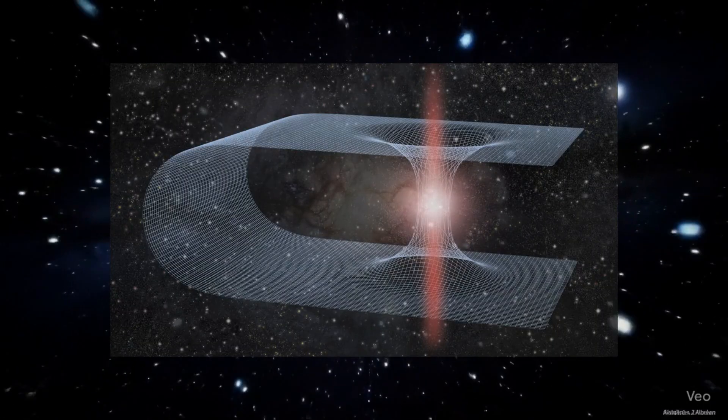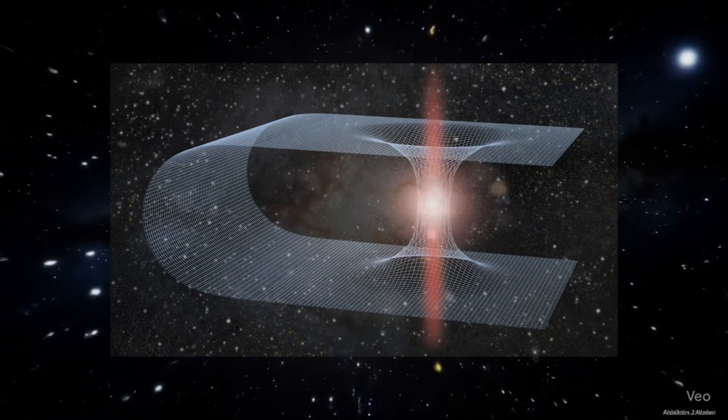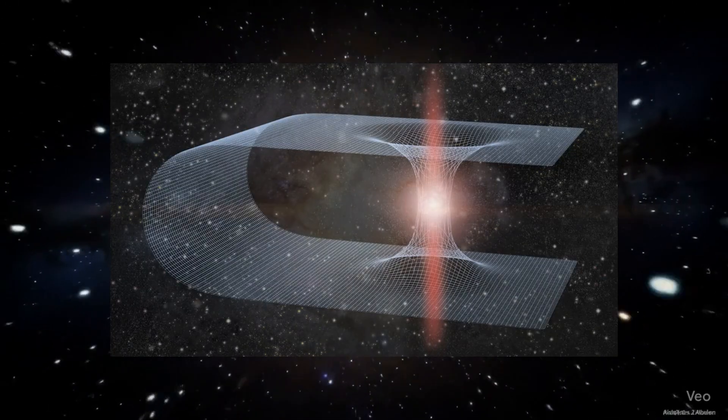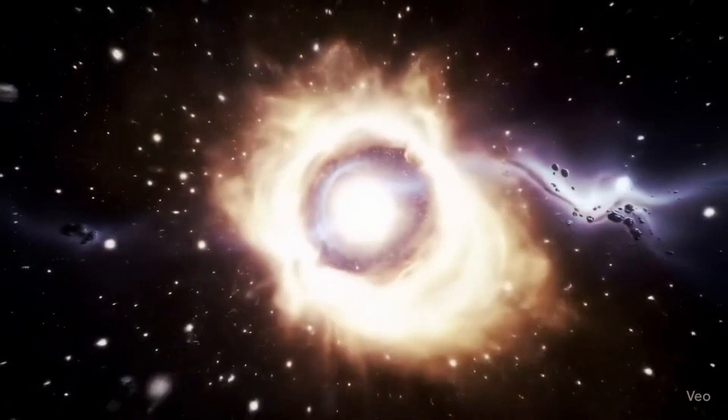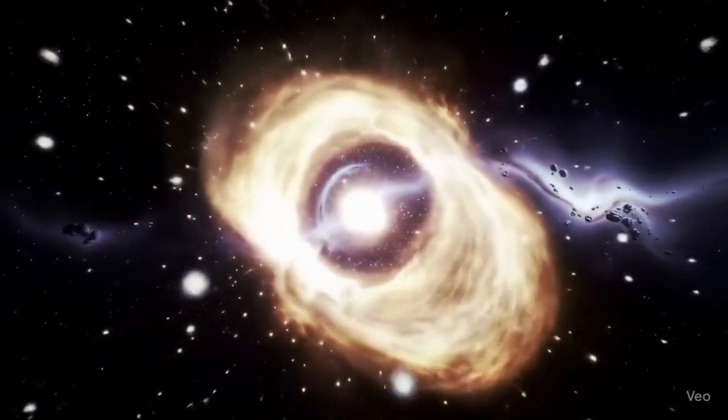But what if you could fold that fabric, bringing point A and point B together, creating a bridge? That bridge is what we call a wormhole, or more formally, an Einstein-Rosen bridge, after Albert Einstein and Nathan Rosen who first explored the idea.